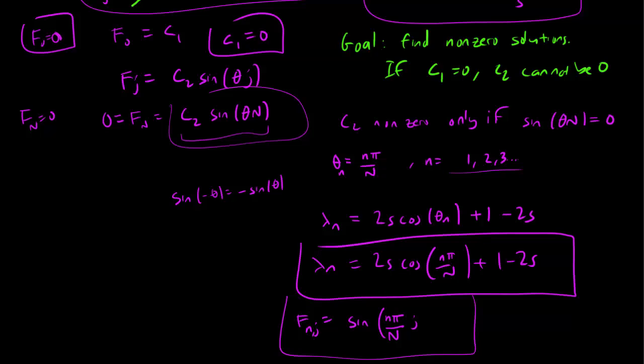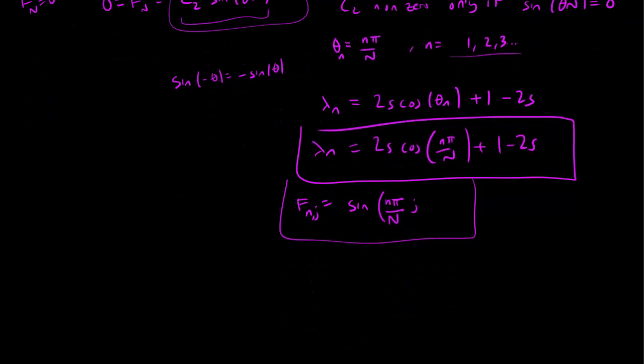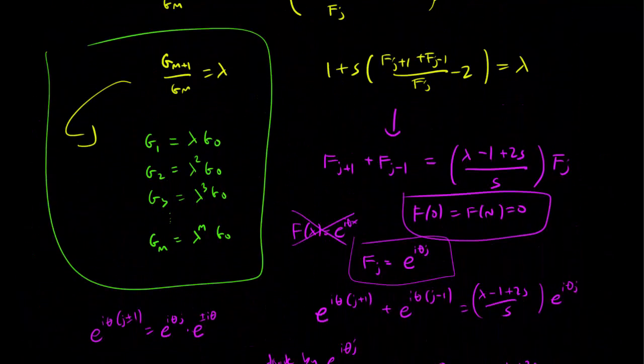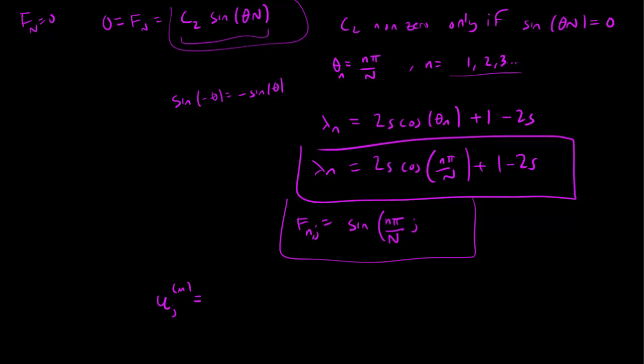And this means that our product solutions are going to be u_j,m equals, for g we have a constant times lambda to the m. We just ignore the constant, and lambda is just going to be this thing: 2s cos(n pi over n) plus 1 minus 2s raised to the m power times the eigenfunction sin(n pi over n times j).